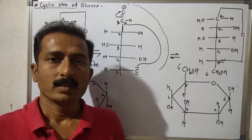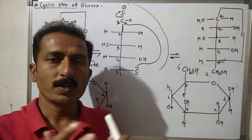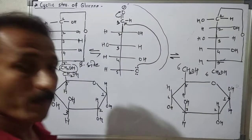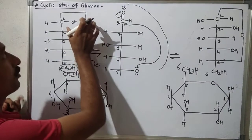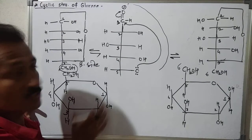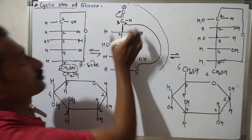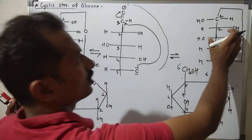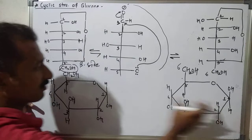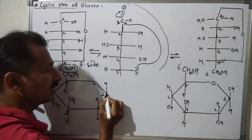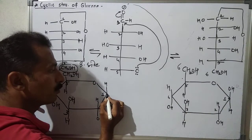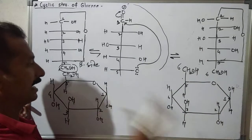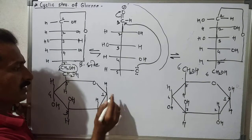Hello everyone. The previous video was interrupted. In this video, we have derived the cyclic structures of glucose from the open chain structure of glucose. These are looking like different structures — only the anomeric carbon needs clarification.